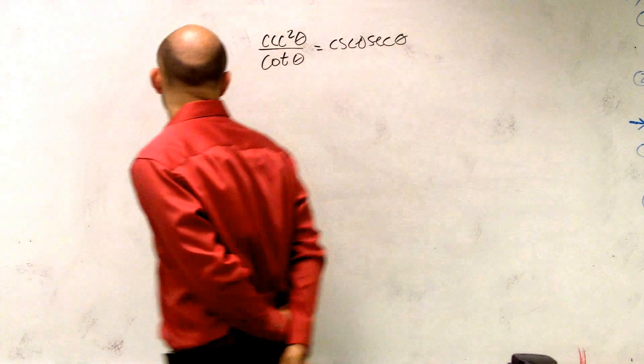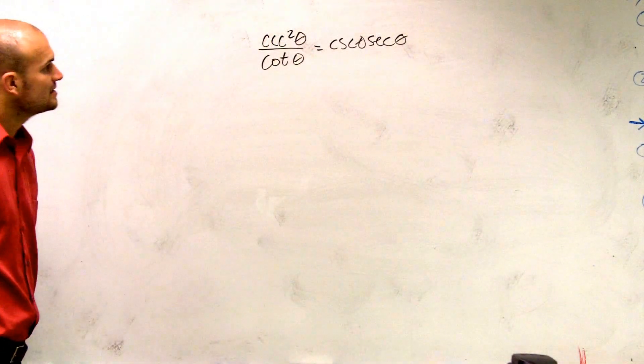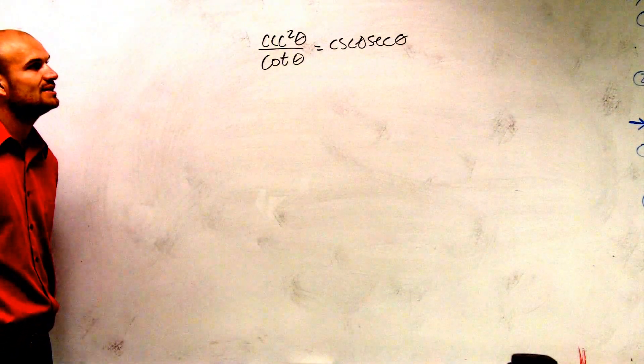If I was going to be looking at this problem, it says cosecant squared of theta divided by cotangent of theta equals cosecant of theta times secant of theta.